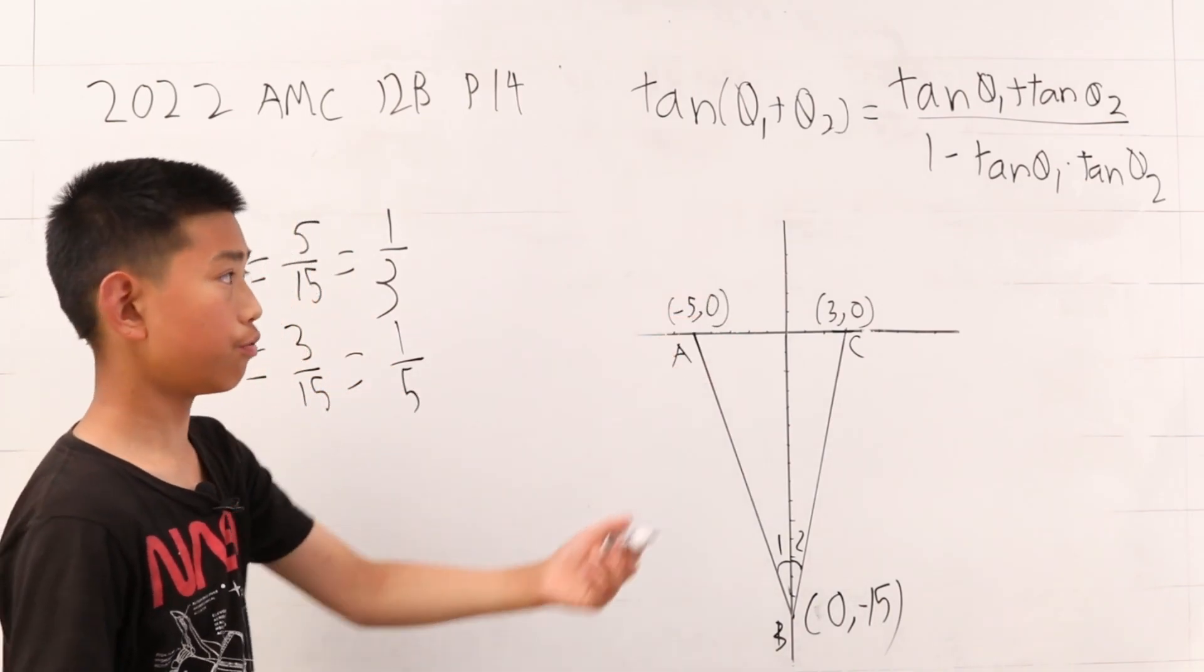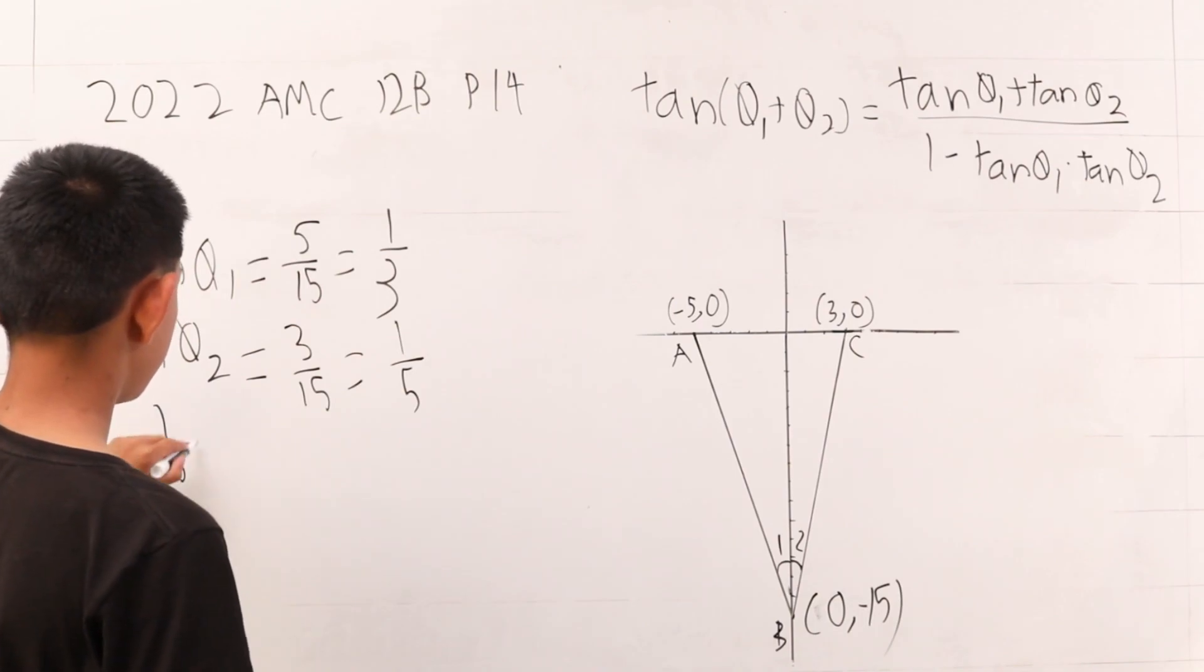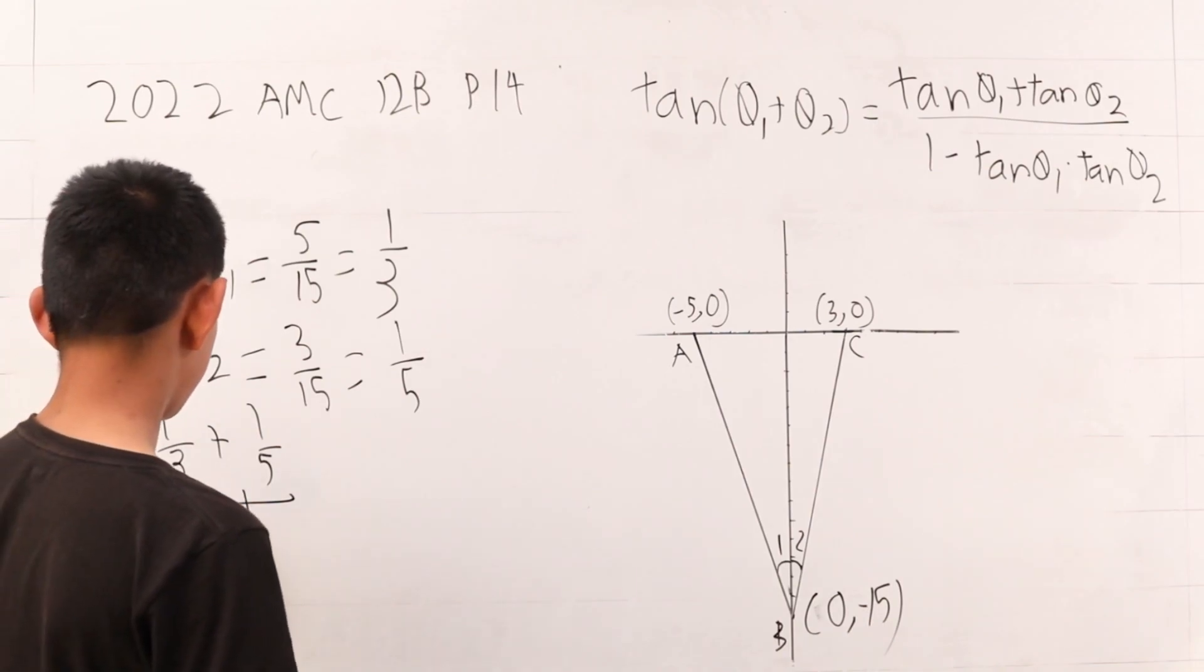Now, we just solve for this formula. So, it's now 1 third plus 1 fifth divided by 1 minus 1 third